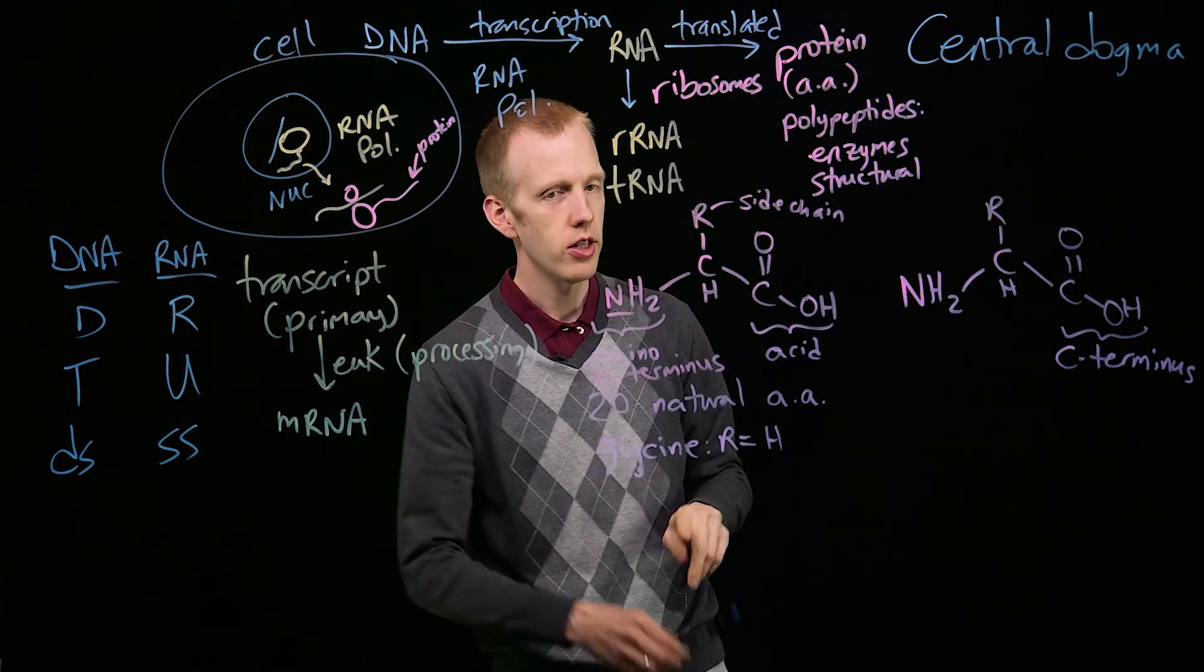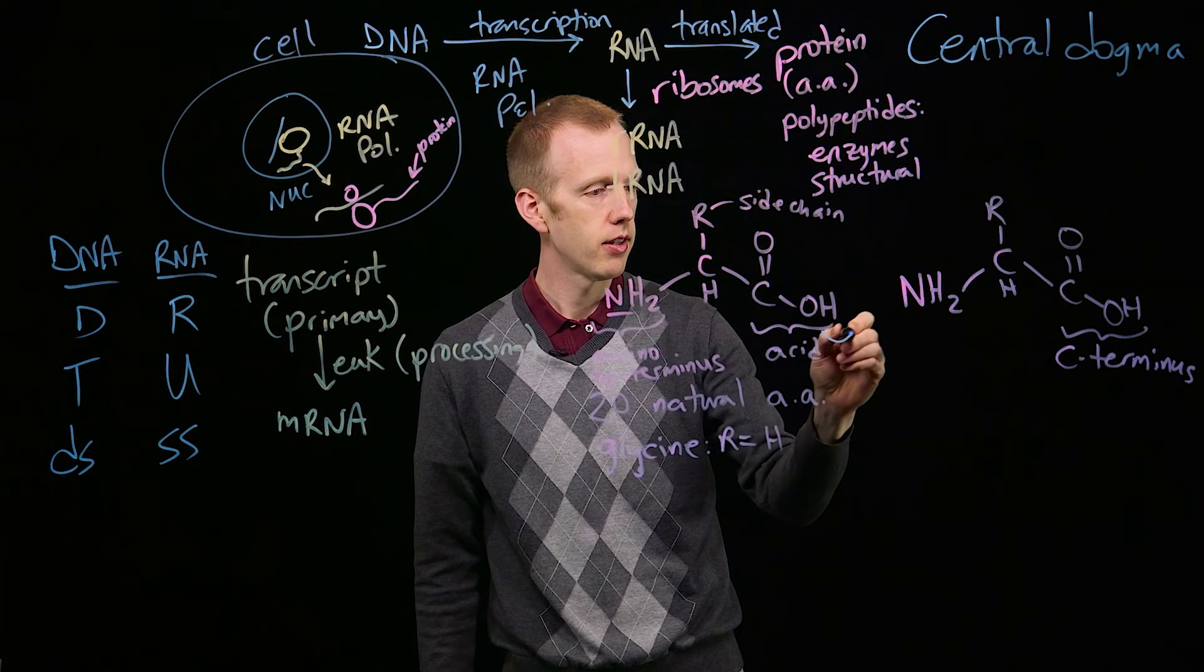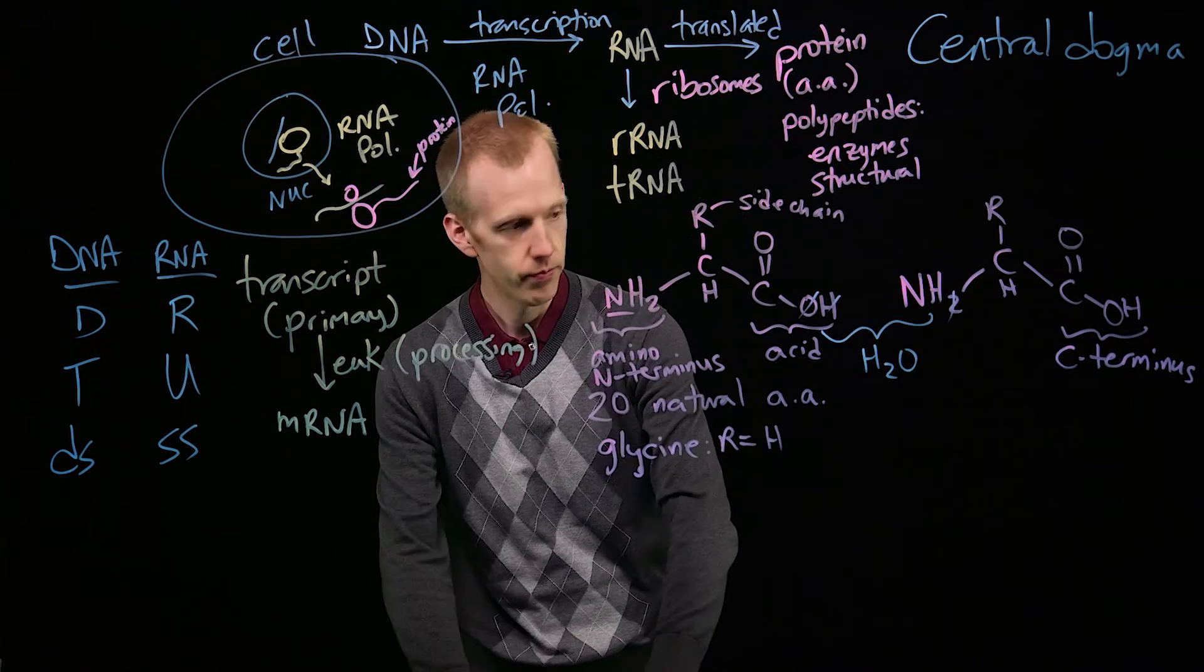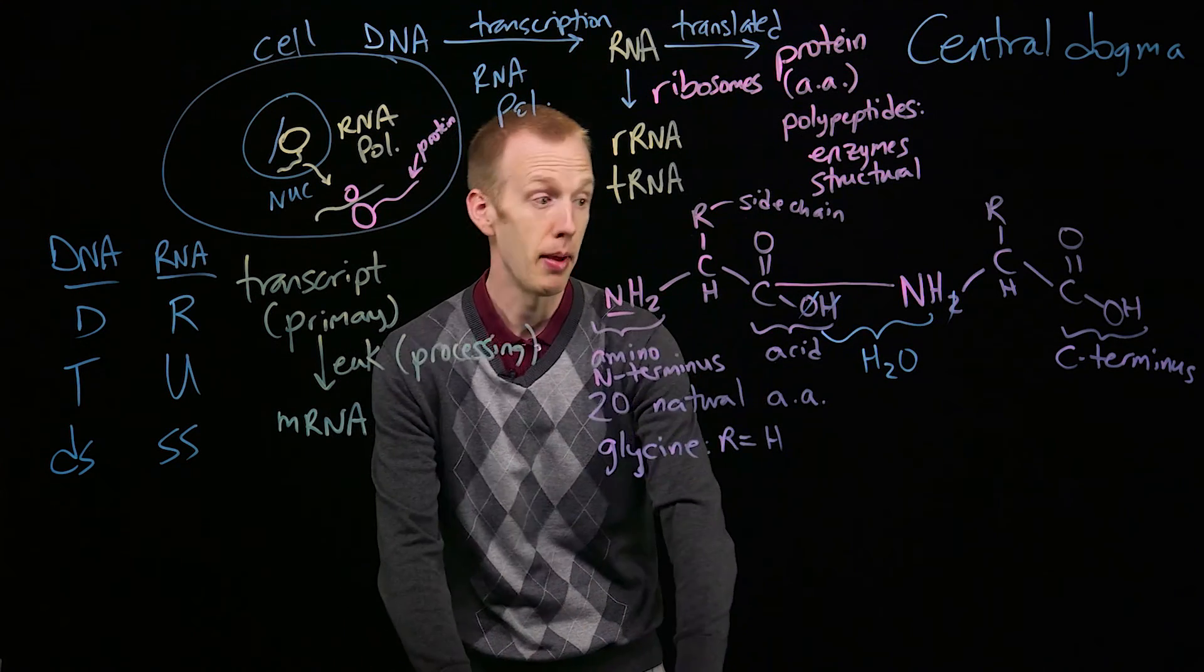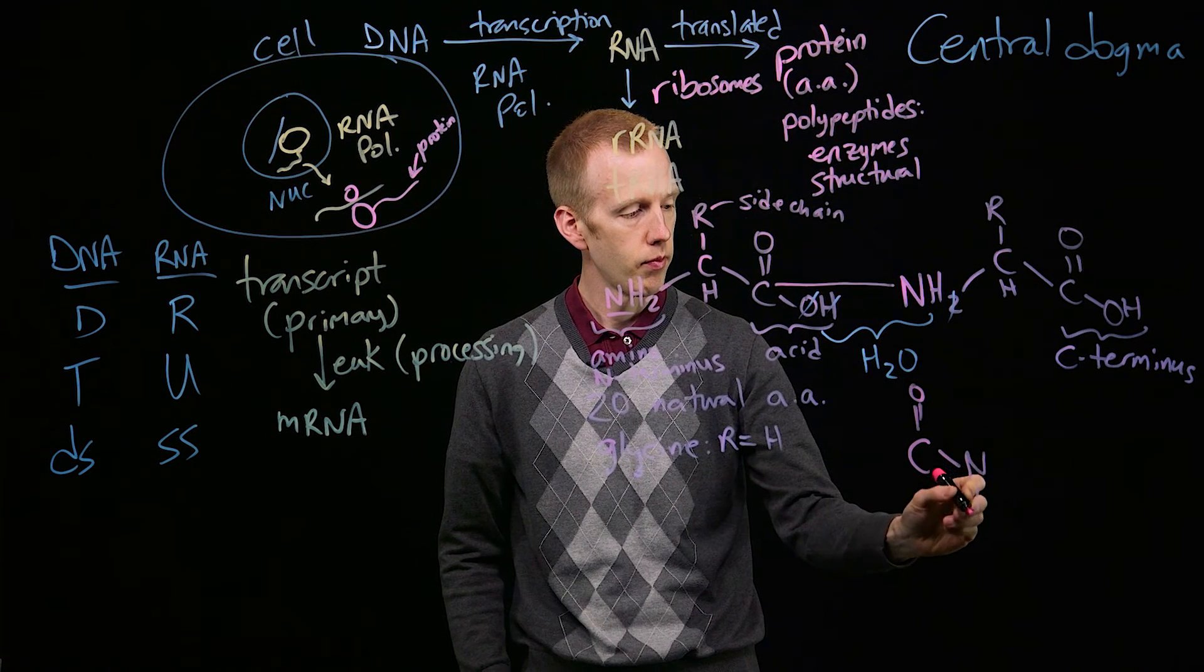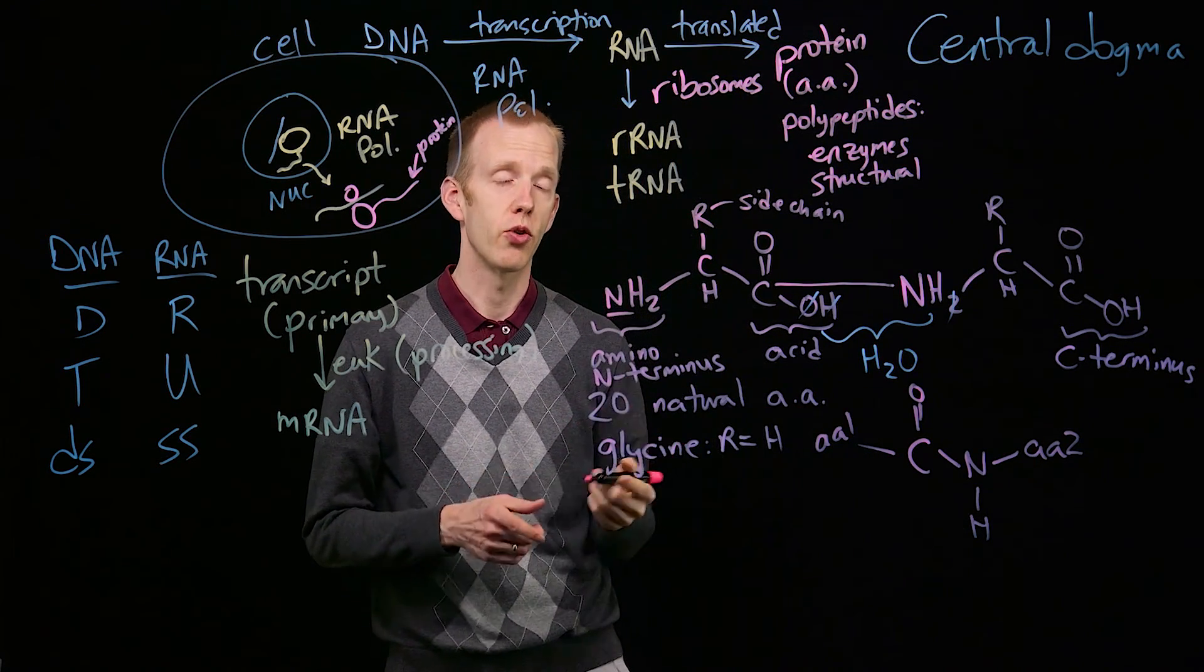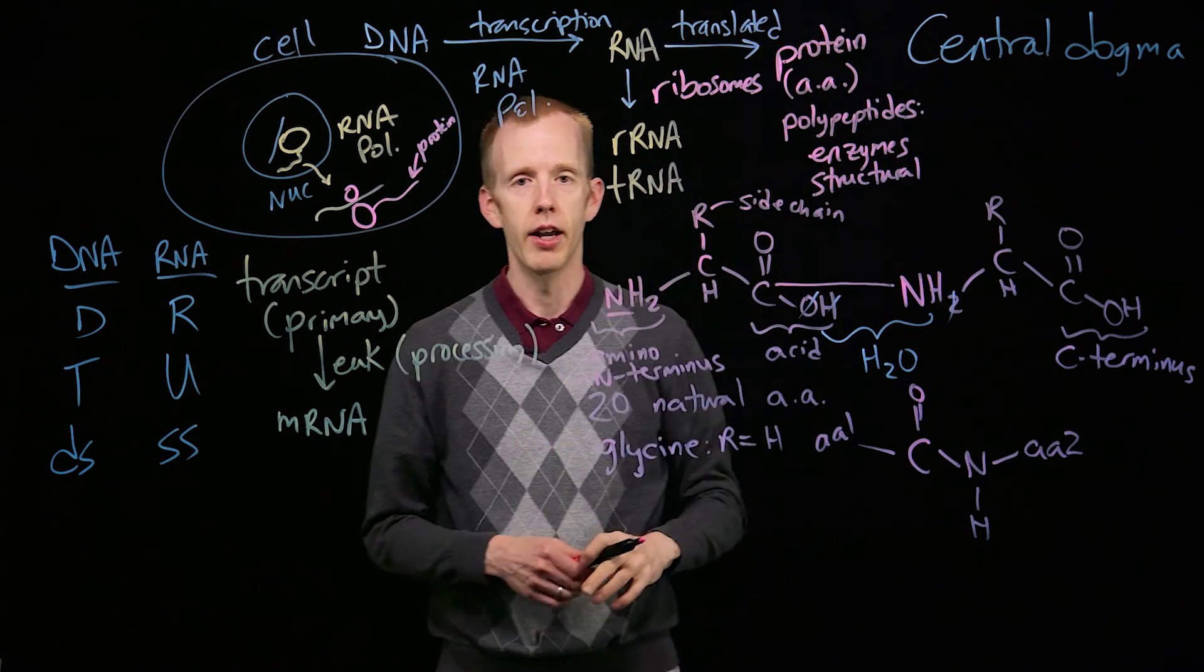And the way that translation works is that the ribosome forms peptide bonds, that's why this is called a polypeptide. And that's a reaction in which two hydrogens and an oxygen are removed. And so that carbon becomes covalently bound to this nitrogen, forming the peptide bond, with amino acid 1 here, and amino acid 2 there. And so during the process of translation, the ribosome just keeps adding new amino acids onto the growing end of that chain.